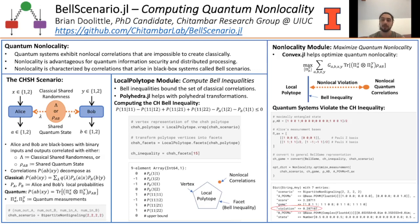Alice and Bob do not communicate but are correlated by either a shared random distribution or a shared quantum-entangled state. The classical and quantum correlations emit fundamentally different structures. In the center column, we introduce the local polytope module for computing the Bell inequalities for the bounds of the classical correlations. This set forms a convex polytope called the local polytope, and any nonlocal quantum correlations lie outside of the local polytope.